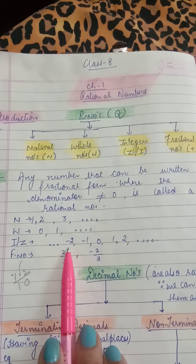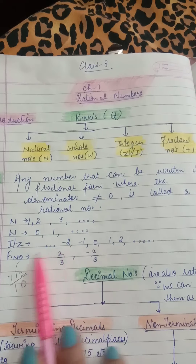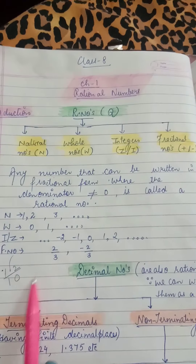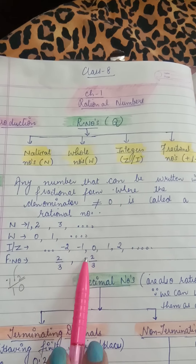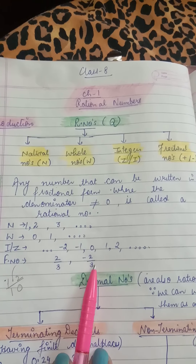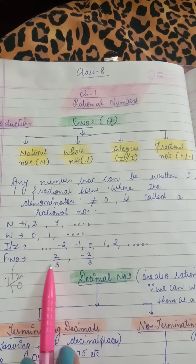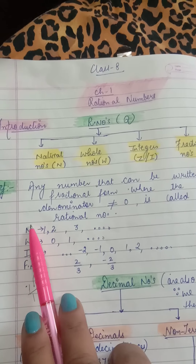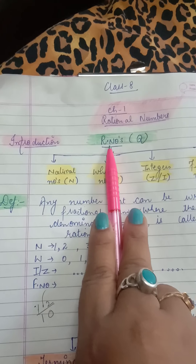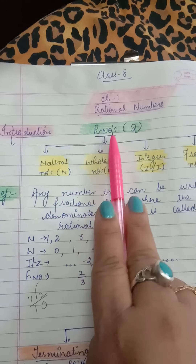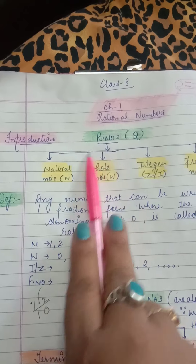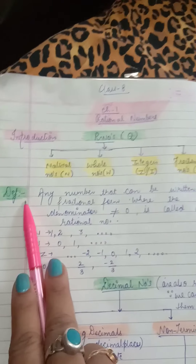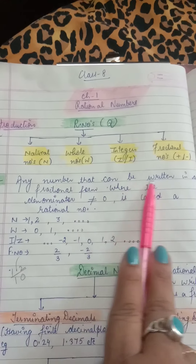Integers, denoted by capital Z or capital I, include all negatives, positives, and 0. Fractional numbers, like 2 upon 3, can be positive or negative, having a numerator and a denominator. In certain cases, these numbers cannot fulfill our calculations, so we require a bigger set called rational numbers. Rational numbers include natural numbers, whole numbers, integers, and fractional numbers.